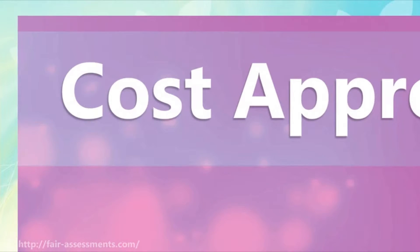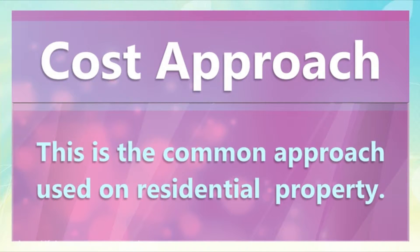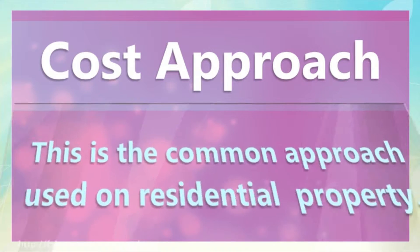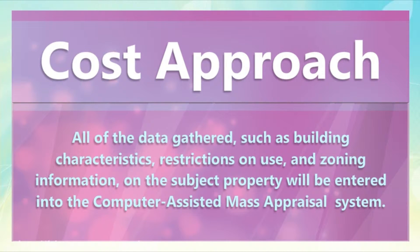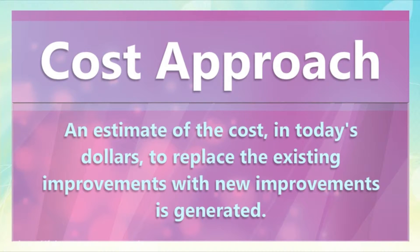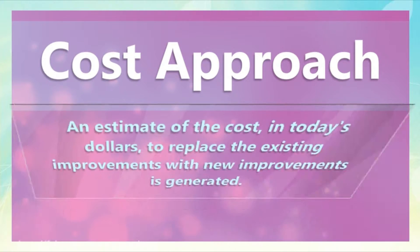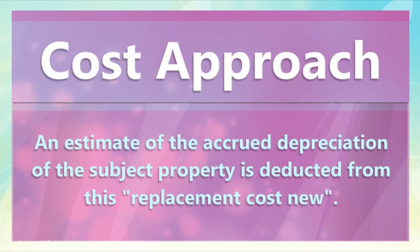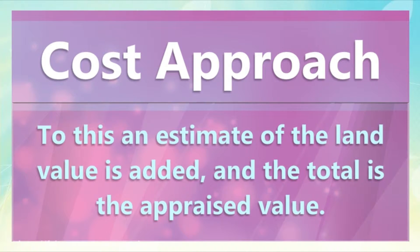Cost Approach. This is the common approach used on residential property. All of the data gathered — such as building characteristics, restrictions on use, and zoning information — on the subject property will be entered into the computer-assisted mass appraisal system. An estimate of the cost, in today's dollars, to replace the existing improvements with new improvements is generated. An estimate of the accrued depreciation of the subject property is deducted from this replacement cost new. To this, an estimate of the land value is added, and the total is the appraised value.